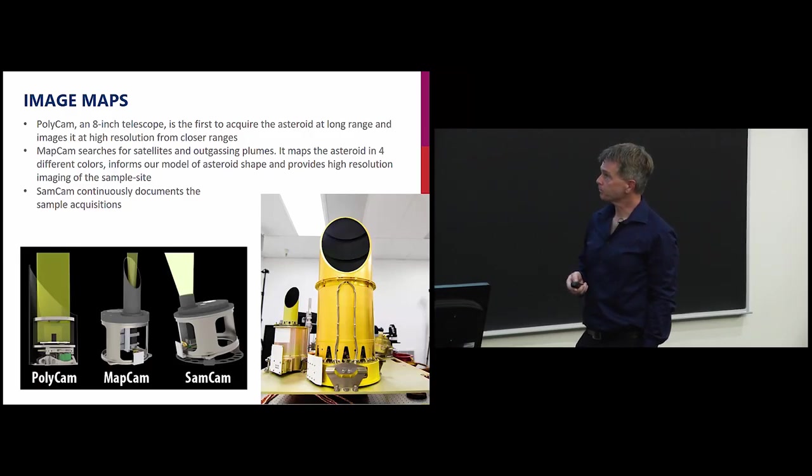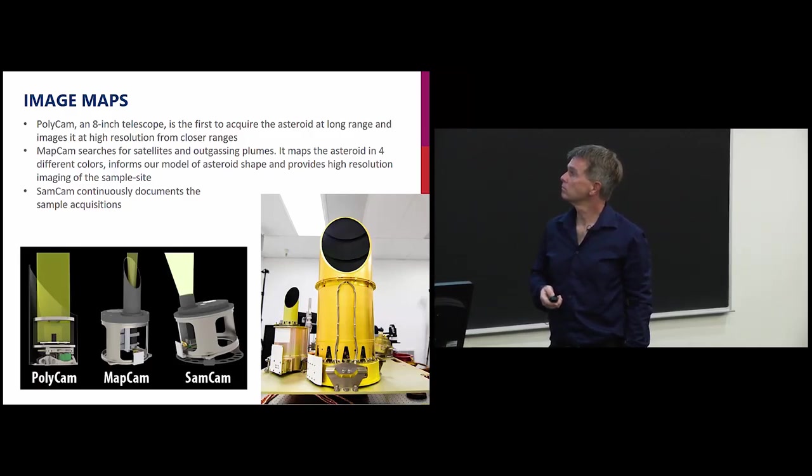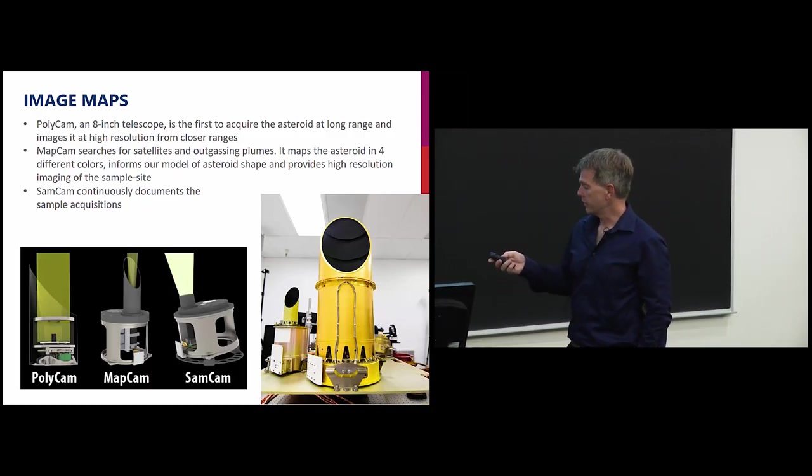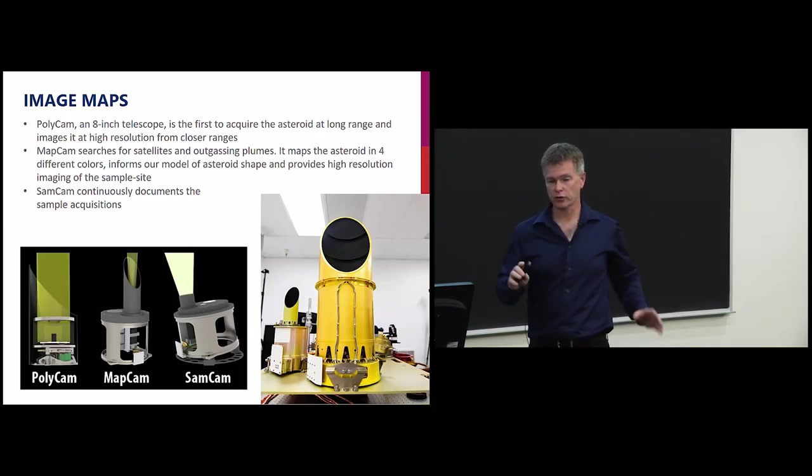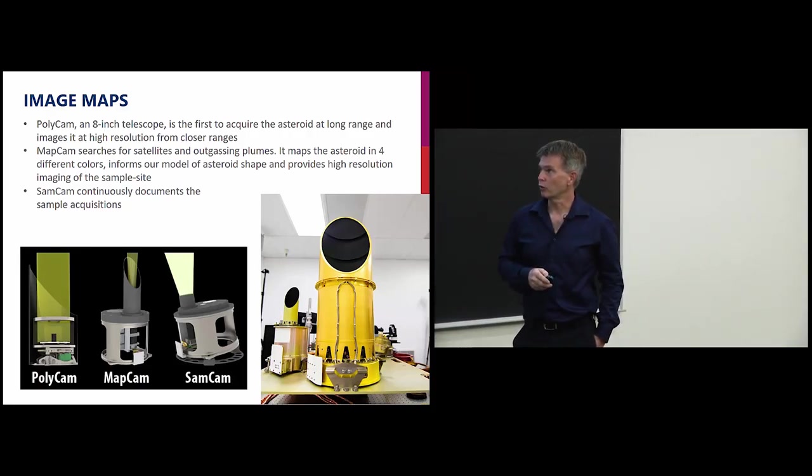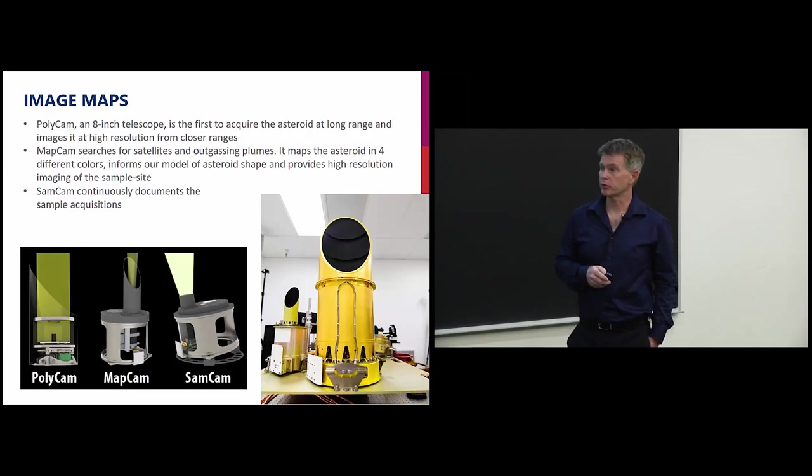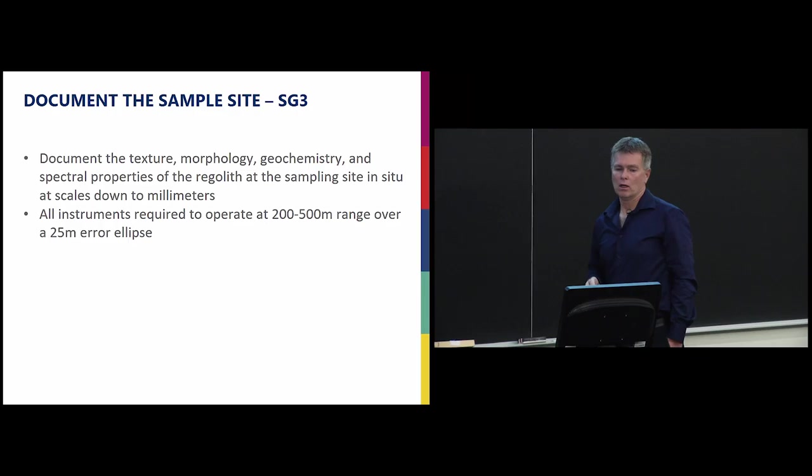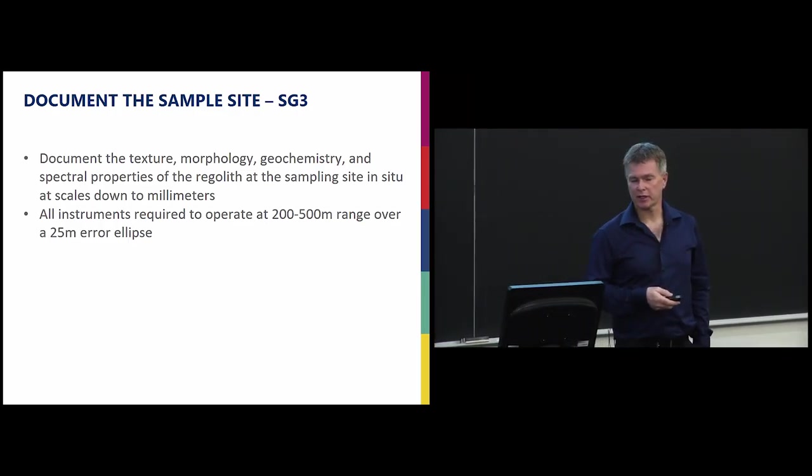Here's the camera system. The reason for the three different cameras: PolyCam is like the long distance camera or the high resolution camera. It has a very narrow field of view, so you can think of it more like a telescope. MapCam has a wider field and it's going to be used for the rougher maps over the surface of the asteroid. And then SamCam is the one being used to look at the sample site and make sure that we have a sample.